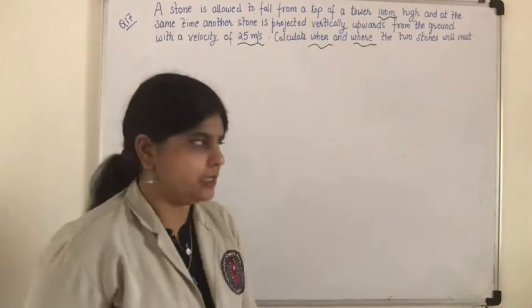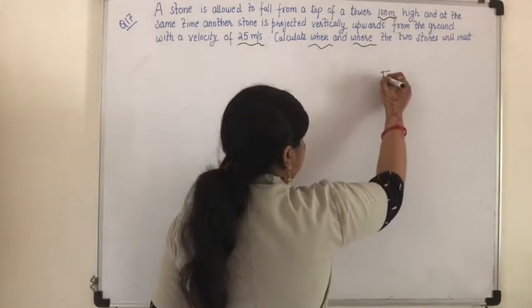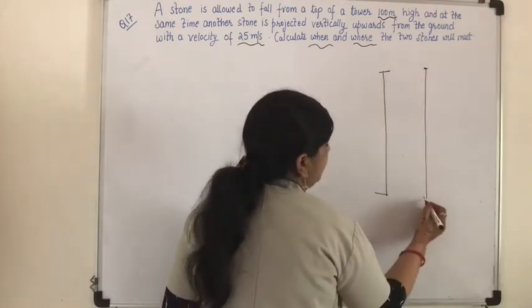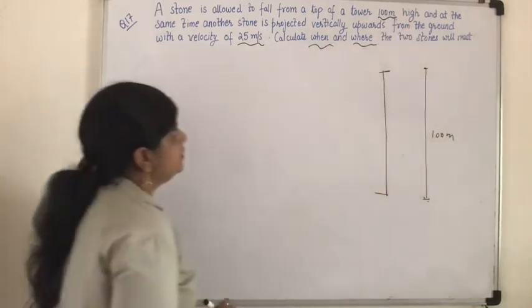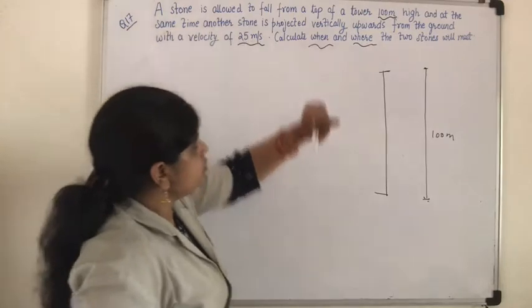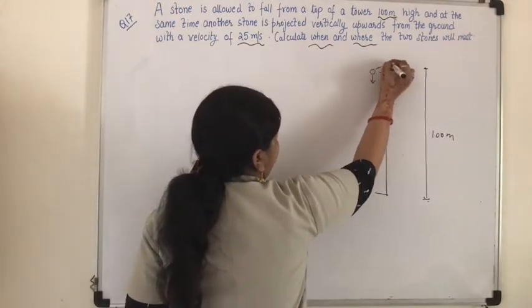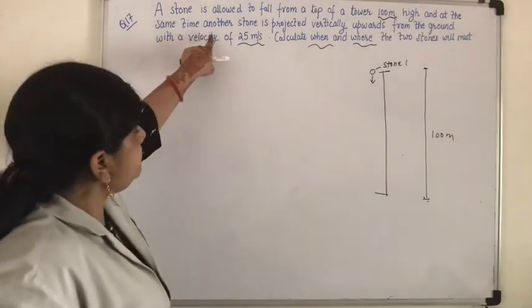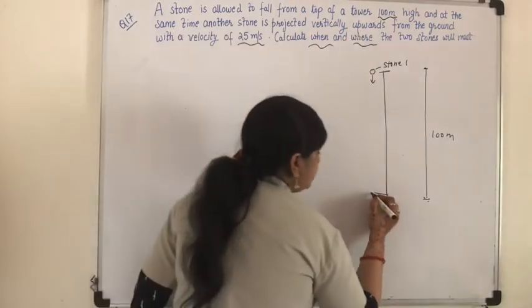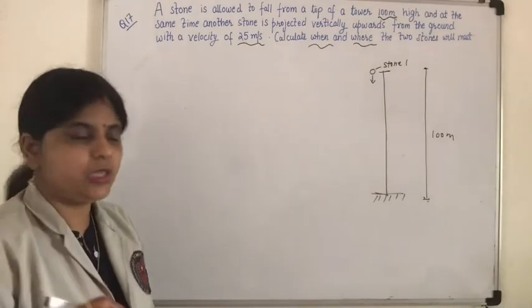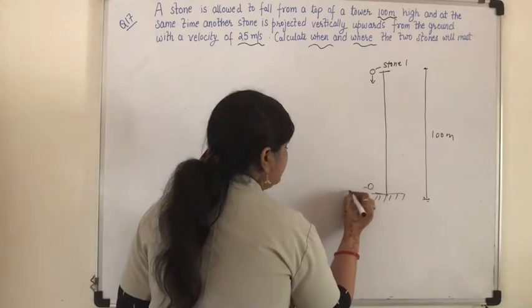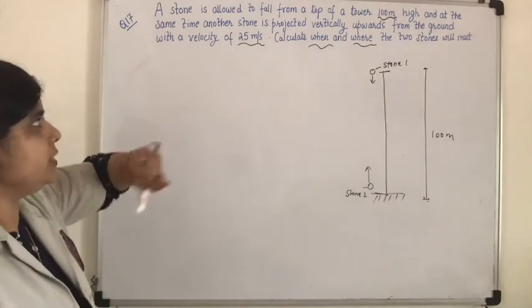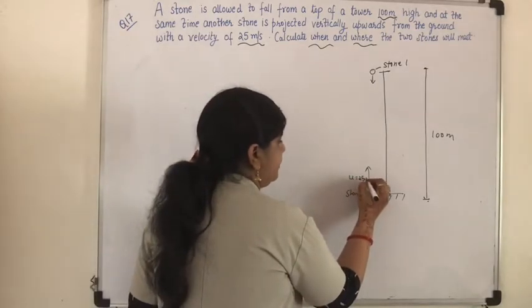So two linear motions we have to consider. We have a tower whose height is 100 meters — that is given to us. A stone is allowed to fall from a height of 100 meters; this is stone 1. At the same time, another stone is projected vertically upwards from the ground — that is stone 2 — with an initial velocity of 25 meters per second.